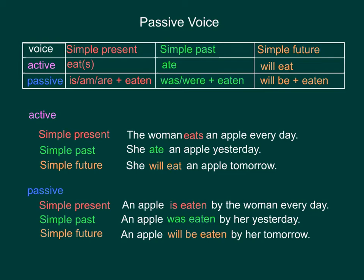The passive voice of the simple present tense is: an apple is eaten by the woman every day. The passive voice of the simple past tense is: an apple was eaten by her yesterday. And the passive voice of the simple future tense is: an apple will be eaten by her tomorrow.